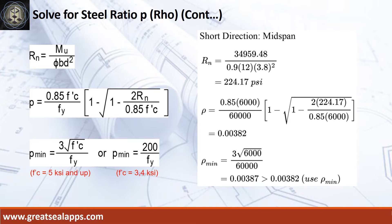Given short direction, mid-span moment equals 34,959.48 inch-pounds. Resistance factor equals 0.9, b equals 12 inches, and d equals 3.8 inches. The beam design ratio RN equals 224.17 PSI and reinforcement ratio rho equals 0.00382. Use rho minimum of 0.00387.